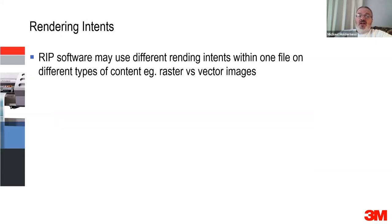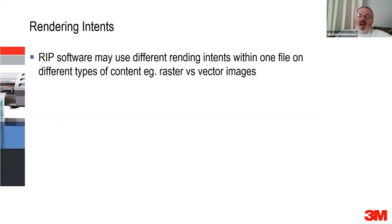Some quite high-end RIP softwares will actually do different types of rendering on different parts of the image — it may apply one rendering intent to big block colors and a different rendering intent to a photographic image within the same file. You can get in there and change it. Have a look in your RIP software, or change things around in Photoshop — it will make a big difference to how your images come out.